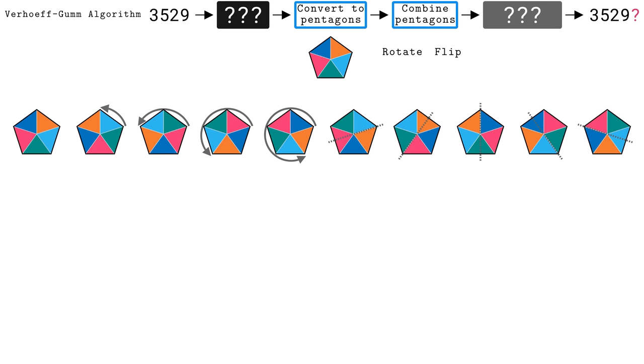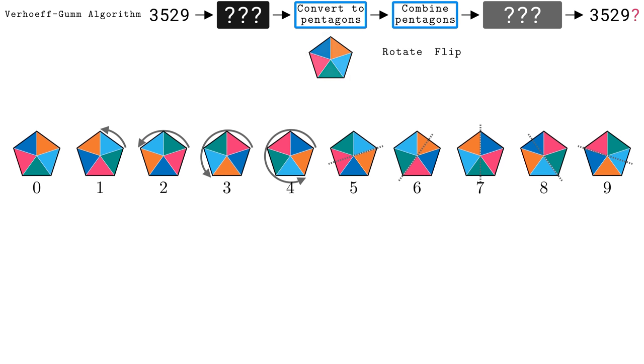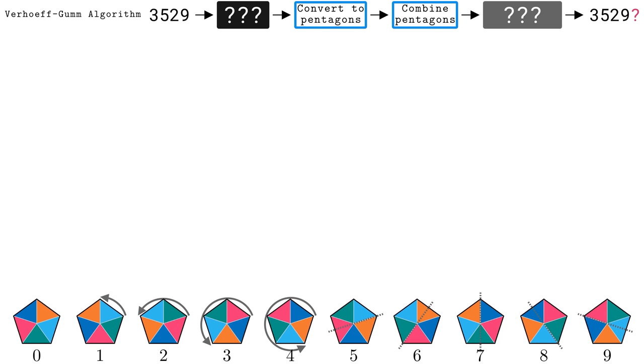We can assign the digits to whatever pentagons we want, but to stay organized, let's assign zero to the original pentagon, one through four to the different rotations of that pentagon, and five through nine to the flips across different axes. Taking the initial digits, 3, 5, 2, 9, we turn them into four different pentagons. We then need to combine them in some calculation to get that check digit we are looking for. How do we combine pentagons, though?